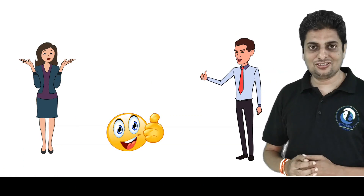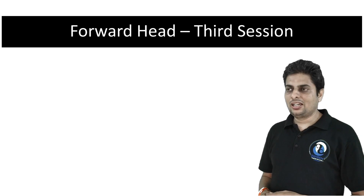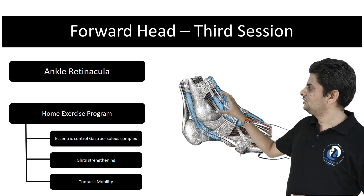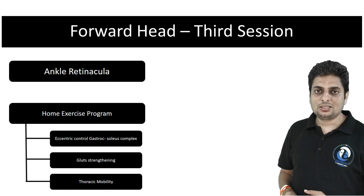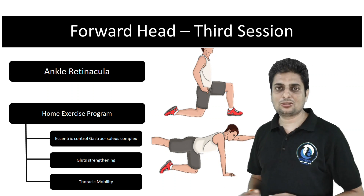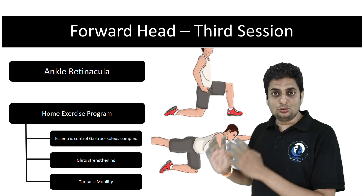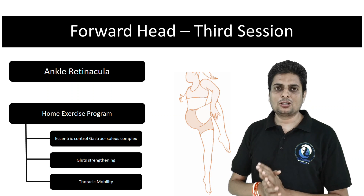Now there was a big change in her posture — her head was perfectly aligned, without any conscious effort from her. That's what we wanted. After that, we started the third part of treatment: releasing the ankle retinaculum, and prescribing a home exercise program that included eccentric training for the gastrocnemius-soleus complex, strengthening of the glutes, and rotatory mobility exercises for the thoracic spine.